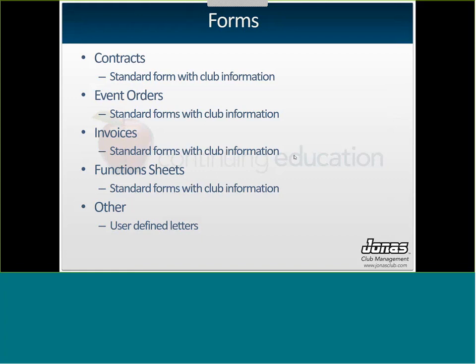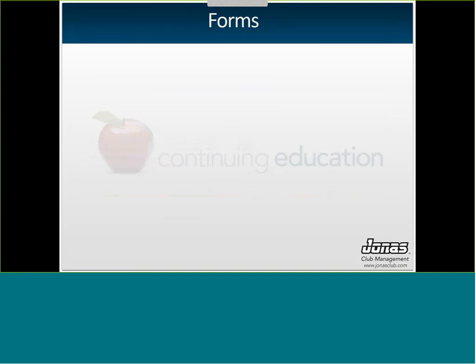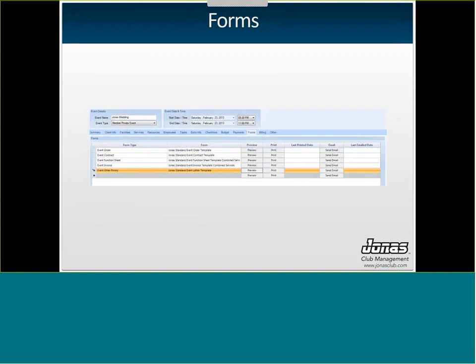For forms — contracts, event orders, invoices, function sheets, and any club-specific forms — these are typically designed per club. There are some standard forms included, but you can add your logo, your own wording, and change the structure. From the Forms tab, you can preview the event order or function sheet, print them directly, or email them. You can email the invoice to the member directly from here, as long as they have an email listed under Client Info.